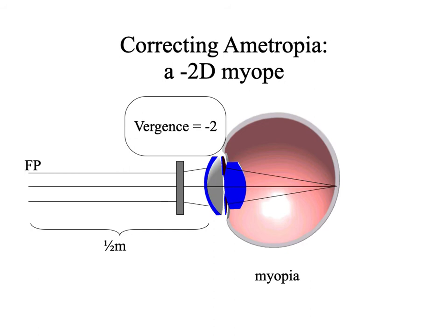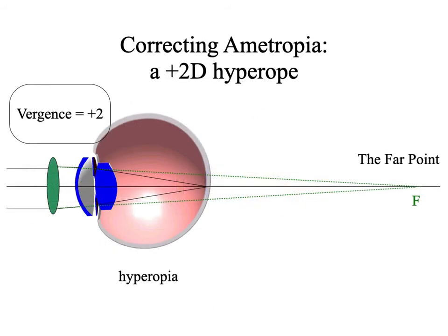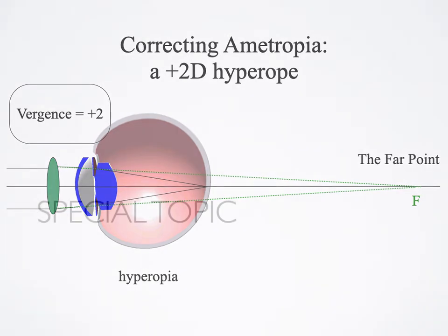What is the association of this lens with the patient's far point? The far point is co-located with the secondary focal point for the correcting lens. The correcting lens has to have its secondary focal point in the same spot as the patient's far point. The same applies to a hyperopic patient — the secondary focal point has to be co-located with the patient's far point.